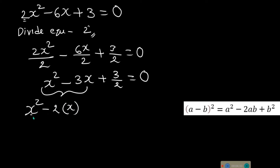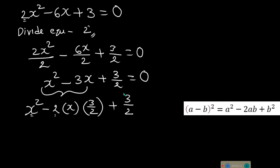We want to write this as x squared minus 2 times x times b, so we need to identify b. Here we write the equation as x squared minus 2 times x times (3/2), so b is 3 over 2. Writing it this way doesn't change anything in the equation — 2 and 2 cancel, giving us minus 3x.